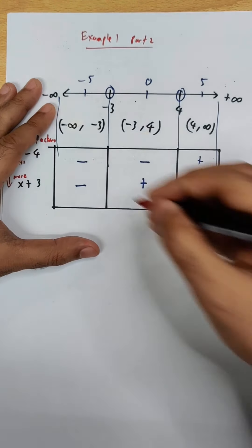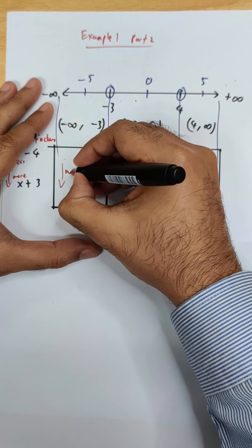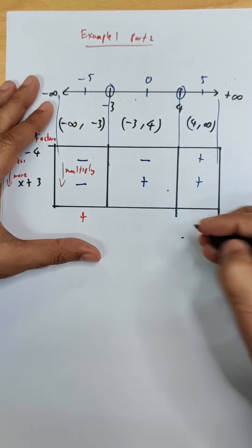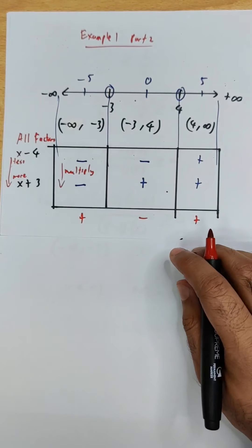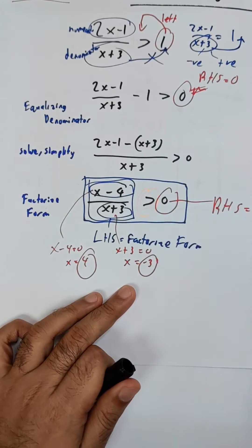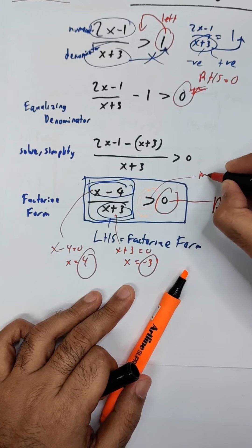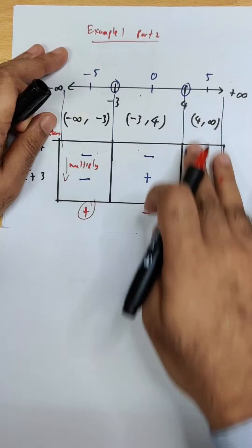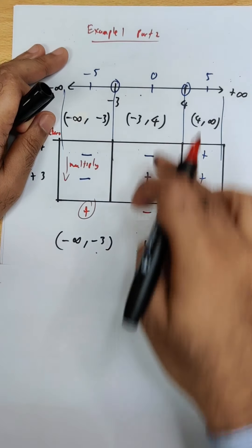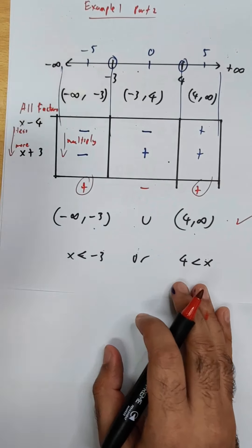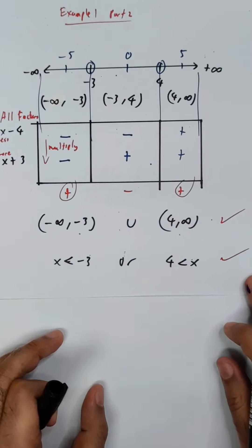Now multiply the signs in each column: negative times negative gives positive; negative times positive gives negative; positive times positive gives positive. We want 'greater than zero', so more is positive. The positive columns are the first and third intervals. Our final answer is negative infinity to negative 3, union 4 to infinity — you can leave it in this form or in inequality form, both are perfectly fine.